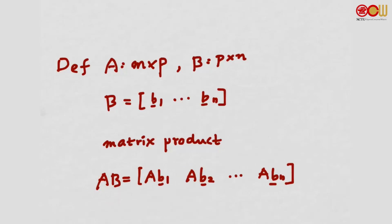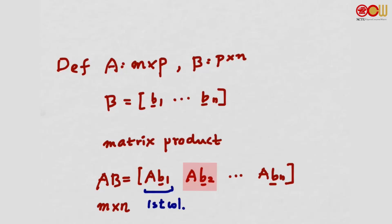The product AB is a matrix of size N by N. The first column is the matrix-vector product AB1, the second column is the matrix-vector product AB2, continuing like this, and the last column is the matrix-vector product ABN. That's the definition of the matrix product.